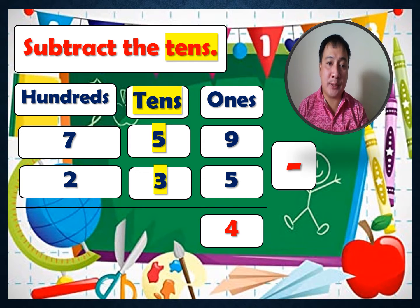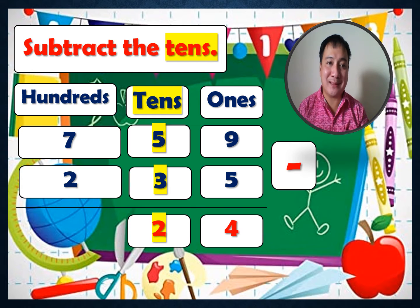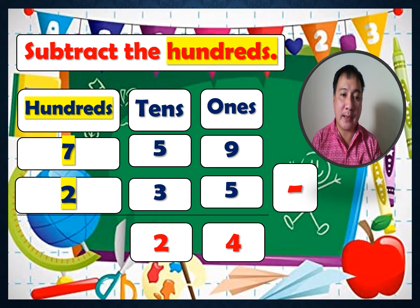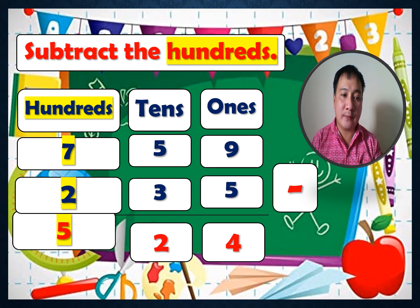Next, subtract the hundreds: 7 minus 2 equals 5. So 759 minus 235 equals 524.